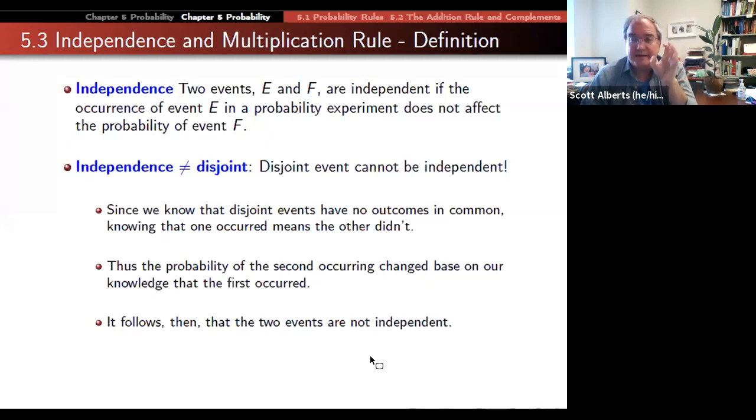Independence is the idea that when one event occurs, it doesn't affect whether or not a different event occurs. Notationally, we say E and F are independent if the outcome of E doesn't affect the probability of F. This is not the same as disjoint.